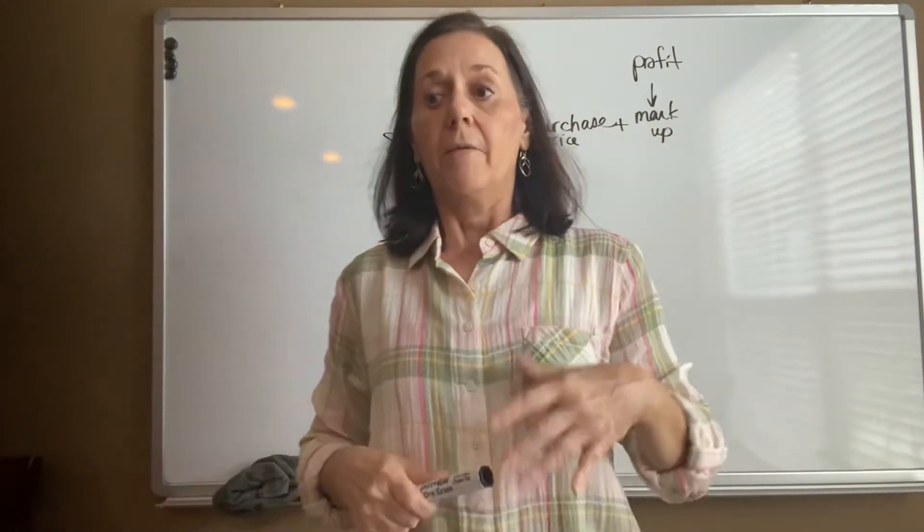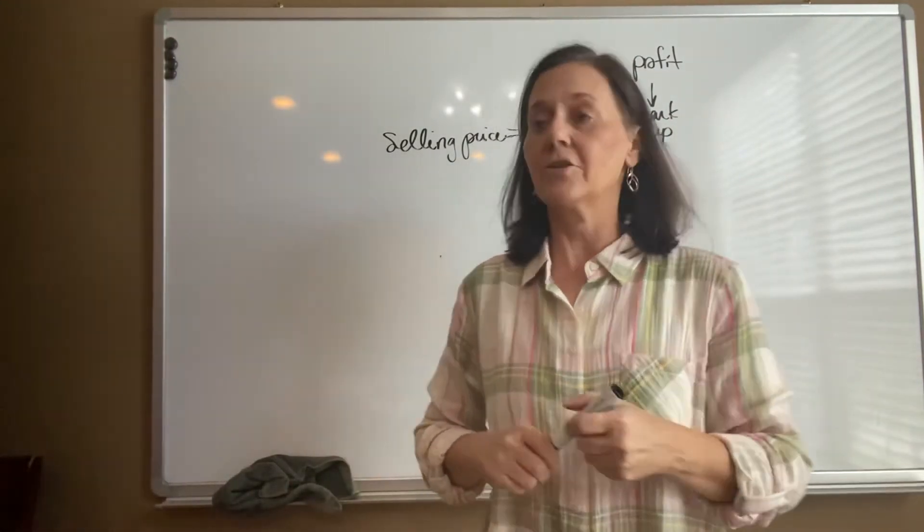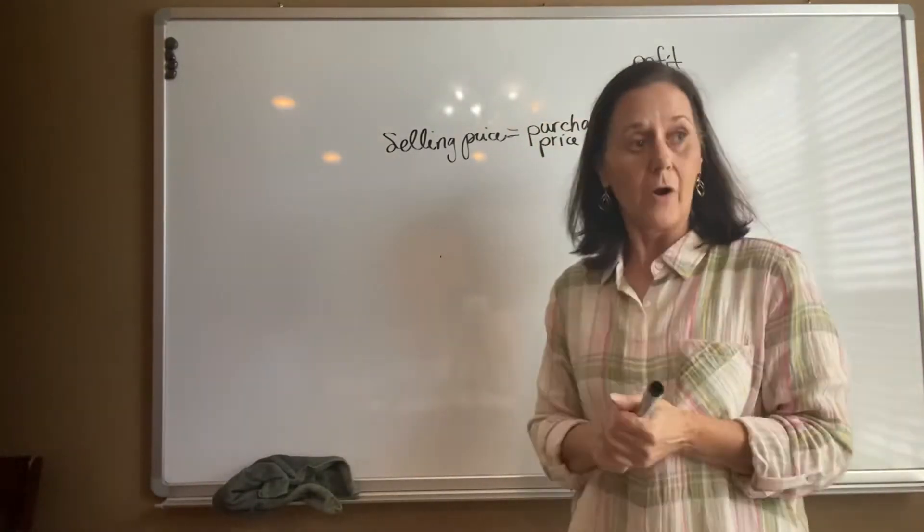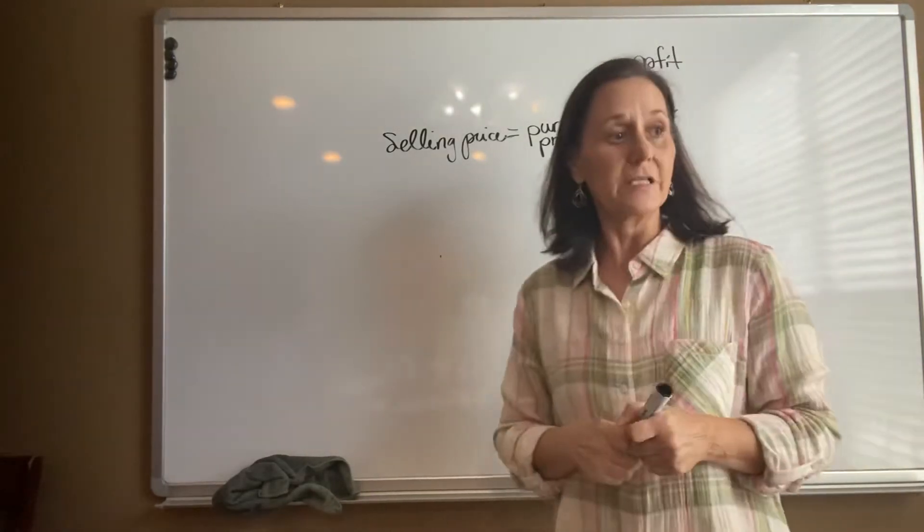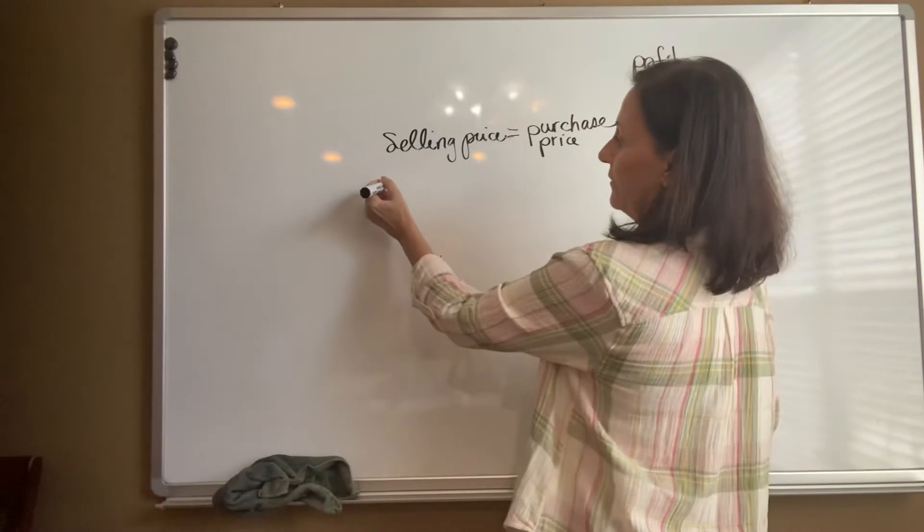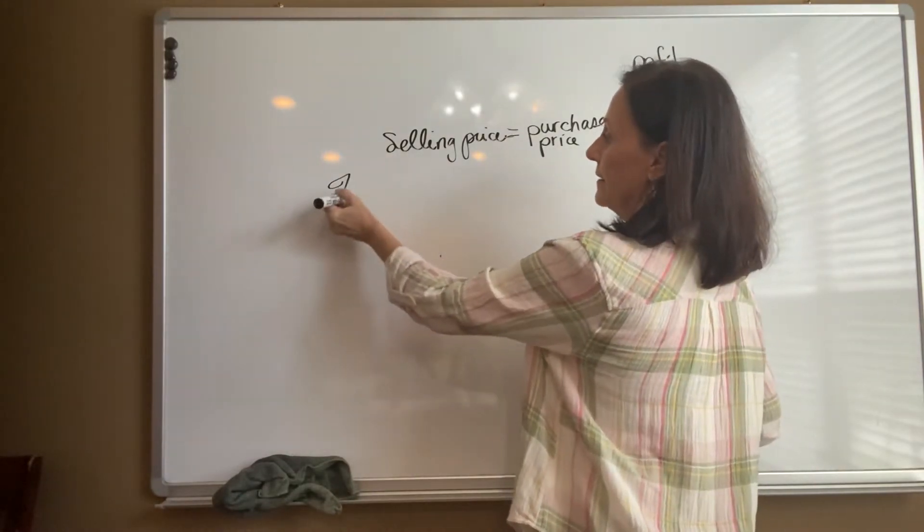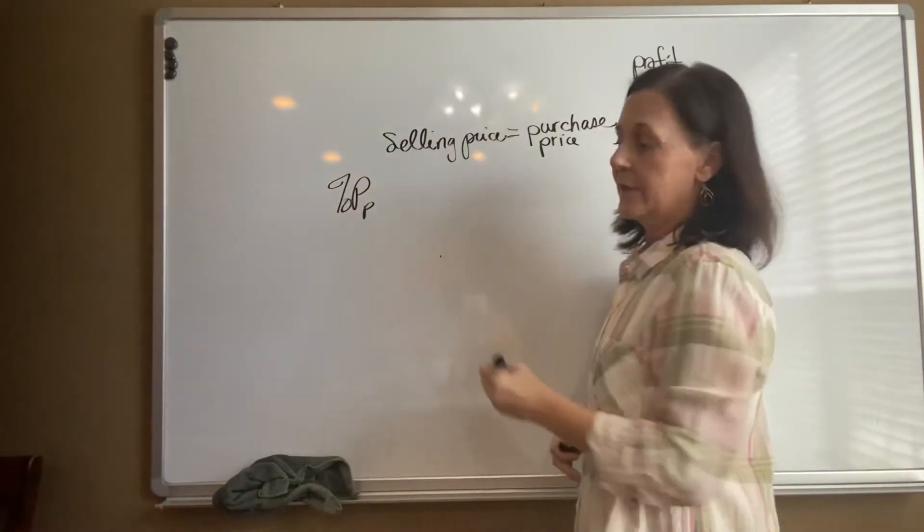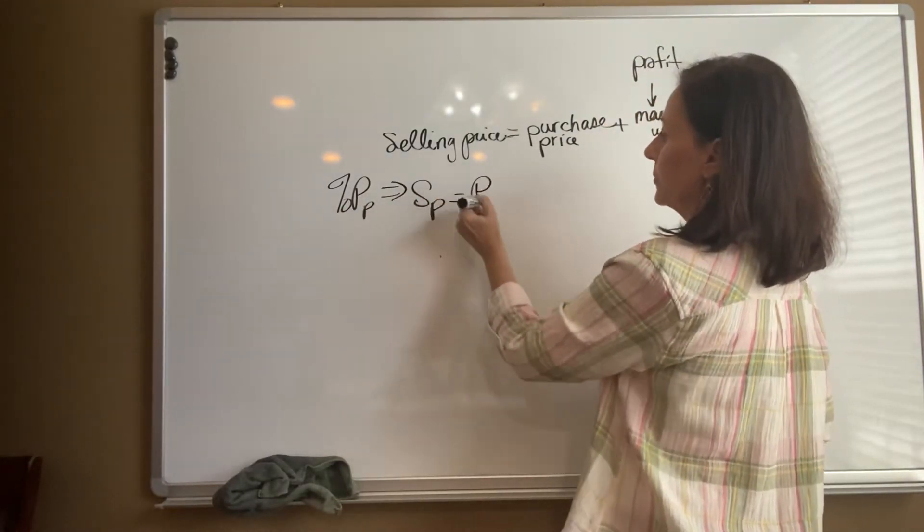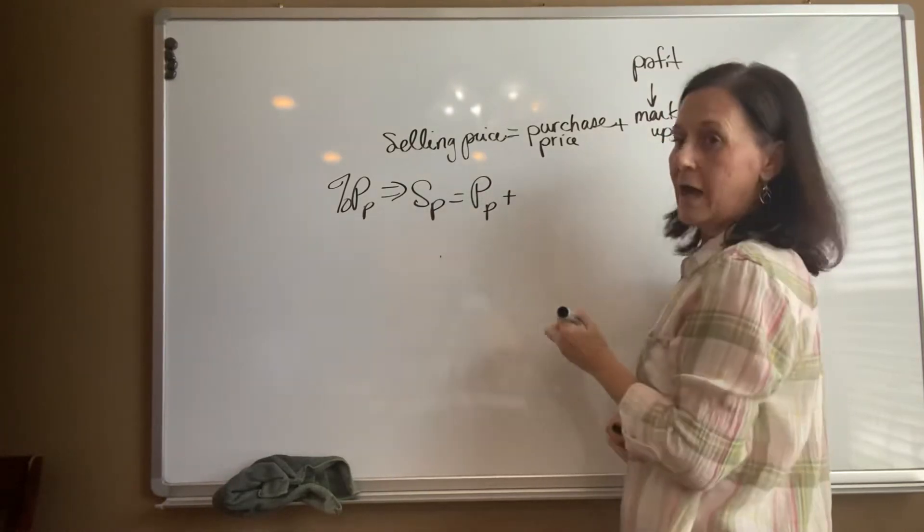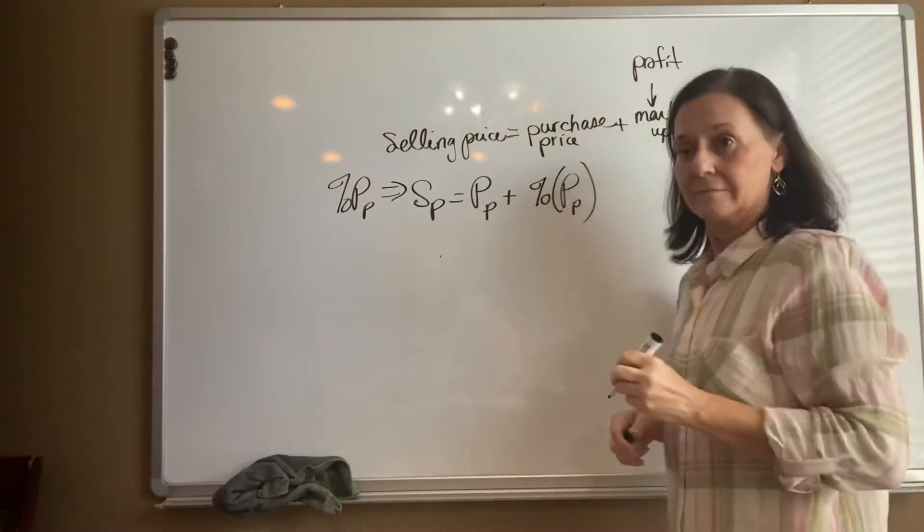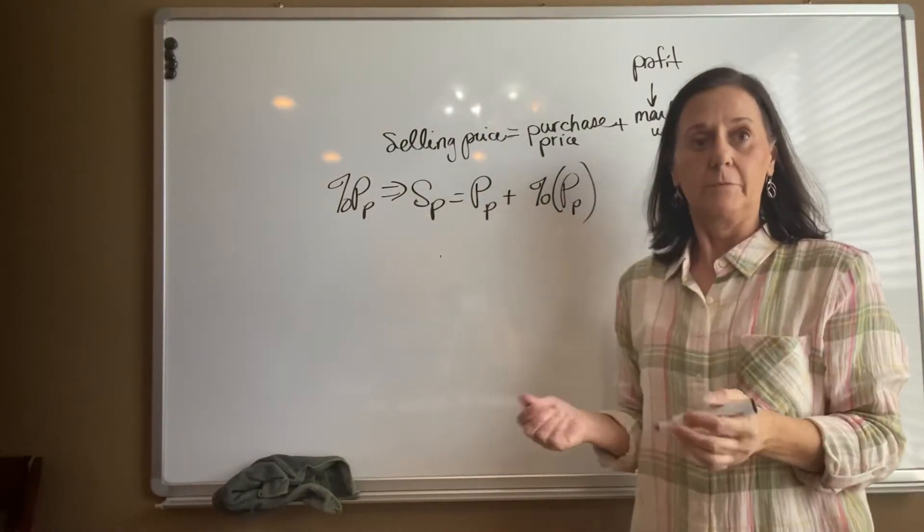So the markup in your problems is either going to be sometimes a percent of the purchase price, sometimes a percent of the sales price. If it's a percent of the purchase price, then your formula is going to look like your sales price equals your purchase price plus whatever the percent is times your purchase price.